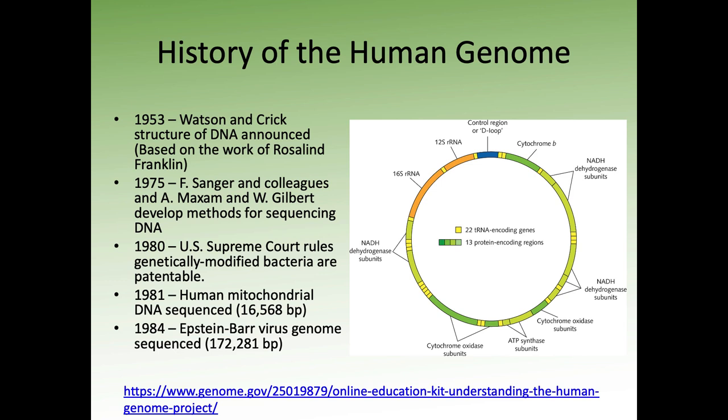In 1953, Watson and Crick announced the structure of DNA and were given credit for discovering it. A lot of their work was largely theoretical — it was really the work of Rosalind Franklin that was used as evidence to show their double helix idea was correct. Linus Pauling's group had proposed a triple helix. Franklin is one of those women in the history of science who has been lost. Unfortunately, she passed away before Watson and Crick were given the Nobel Prize, so she couldn't be considered. But she was incredibly important to this discovery.